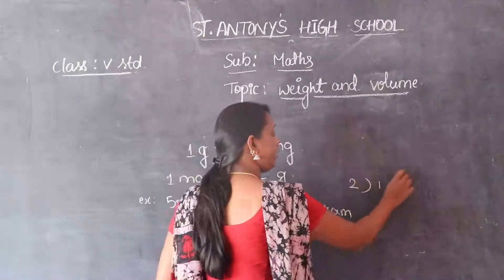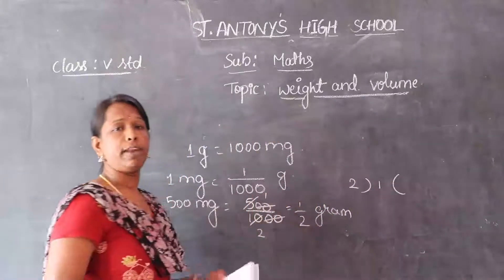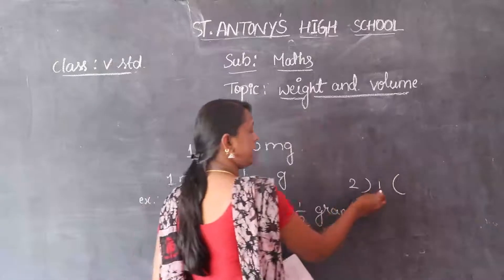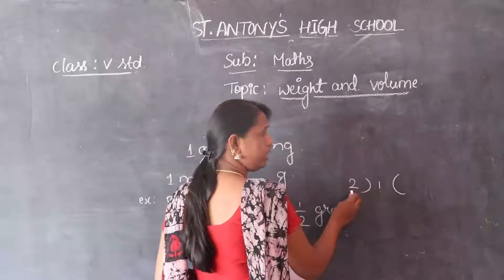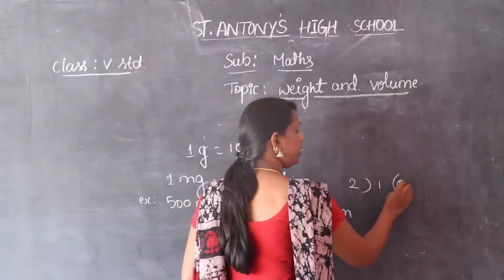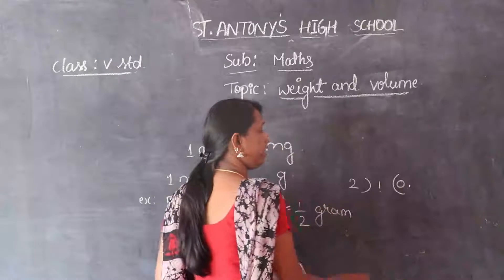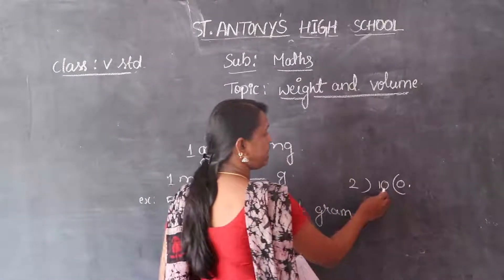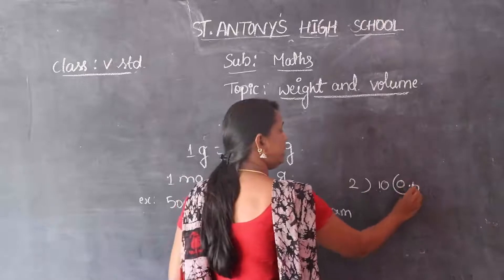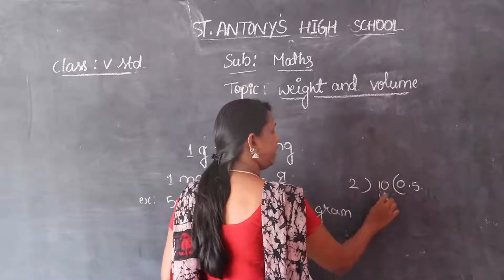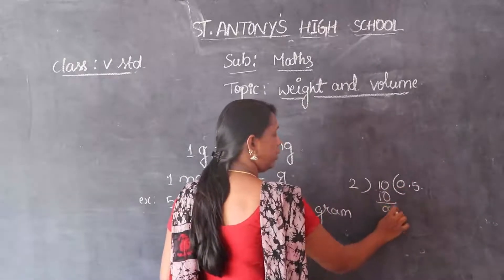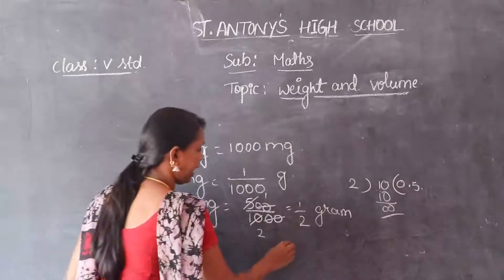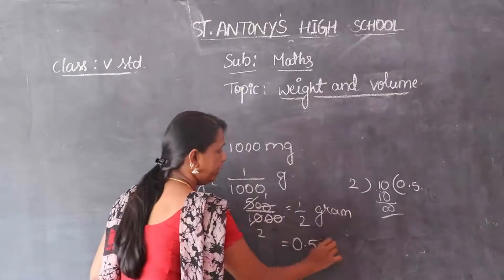1 divided by 2. We know the decimal fractions. Here, it is not possible because 1 is smaller than 2. Write 0 and point in the quotient place. We get 0 in the dividend place; the number 1 becomes 10. 2 fives are 10. Remainder is 0. Answer is 0.2 gram.